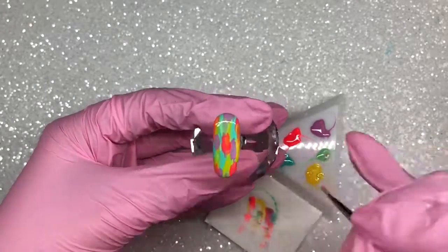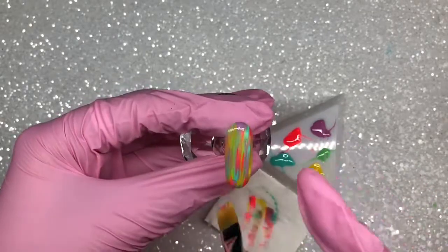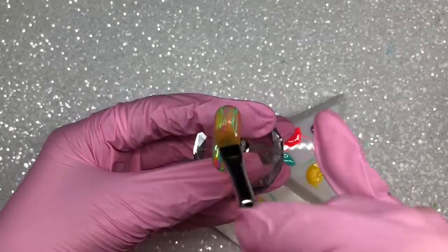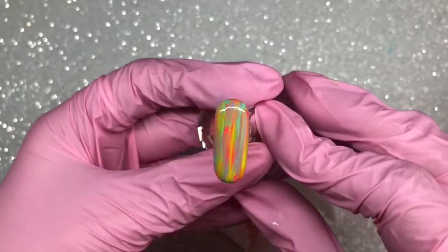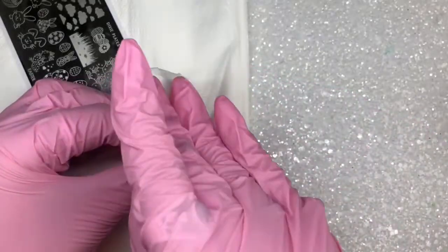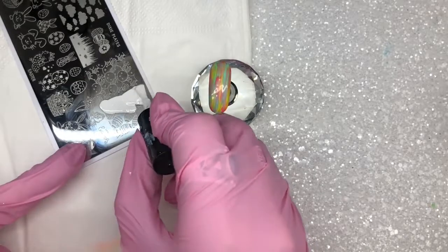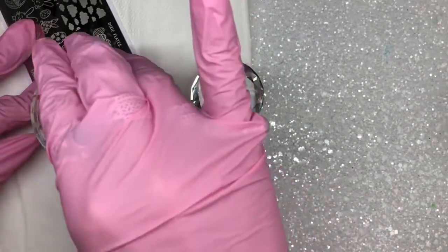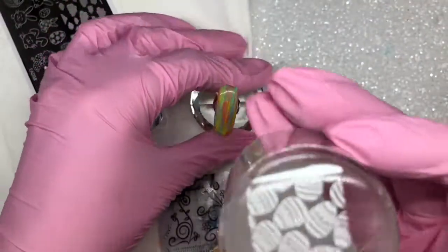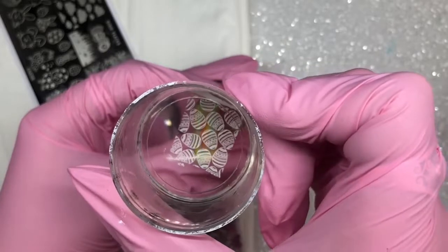You could always leave it like this, but I'm going to take my Magpie ombre brush and drag it down the nail. It creates this awesome paint-strokey, streaky blended effect. It looks really awesome. I cured that in my lamp for 30 seconds and then wiped off the inhibition layer, the tacky layer, so it's ready for stamping.